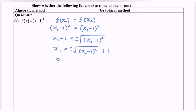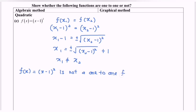So where x₁ is not equal to x₂. For this quadratic case, f(x) = (x − 1)² is not a 1-to-1 function. The reason is that x₁ is not equal to x₂. This also shows that the inverse function does not exist.